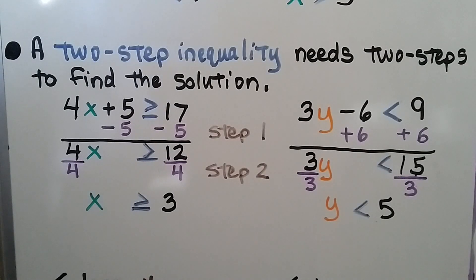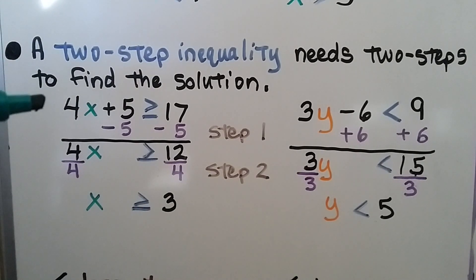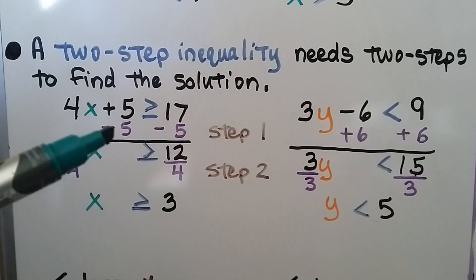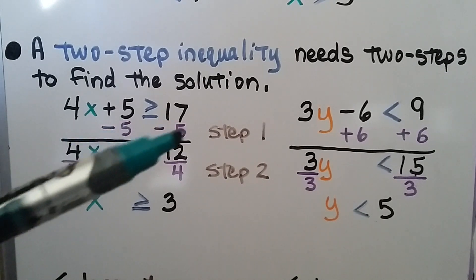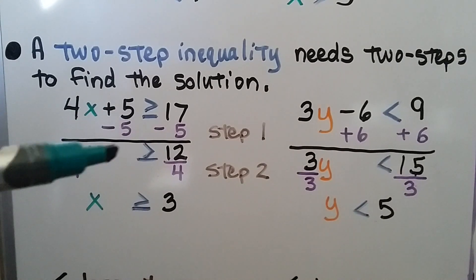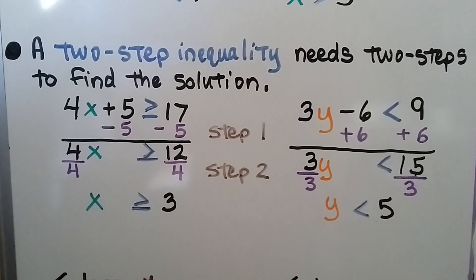Here we have two examples of two-step inequalities. They need two steps to find the solution. Here we have 4x plus 5 is greater than or equal to 17. We can use an additive inverse — add a negative 5 to both sides of the inequality sign — create a zero pair here, and we're left with 4x is greater than or equal to 12.